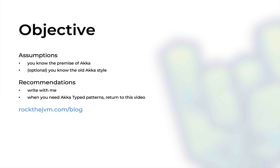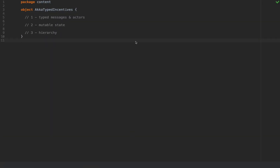In this video I'm going to assume that you already know the basic premise of Akka, which is the actor model as being an alternative to writing distributed and fault tolerant code. I'm also going to do some slight comparisons with the old Akka API, so if you know the old Akka style with creating and changing actor behavior that is a bonus but it's not required. As always I will recommend that you code alongside me, and whenever you need to refer back to these patterns or to the concepts in this video, just refer back to this video or to the other videos I'm going to post on Akka Typed.